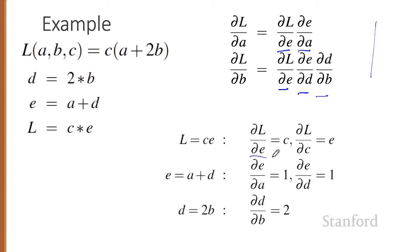The derivative of L with respect to E is C, and the derivative of L with respect to C is just E. Making use of the fact that the derivative of a sum is the sum of the derivatives: the derivative of E with respect to A is just one, the derivative of E with respect to D is just one, and the derivative of D with respect to B is just two.